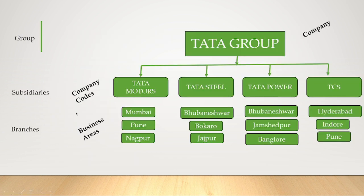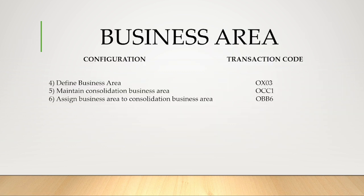As depicted in the picture, we understand what is company, what is company code, and what is business area. At group level we call it a company. Subsidiary companies we call company codes, and branches in SAP terminology we call business areas. The transaction codes for business area configuration are: Define Business Area — OX03, Maintain Consolidation Business Area — OCC1, and Assign Business Area to Consolidation Business Area — OBB6.